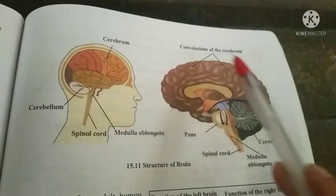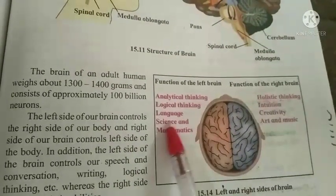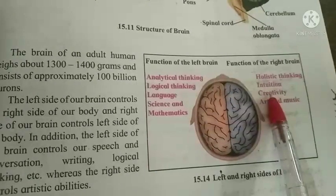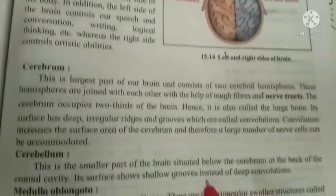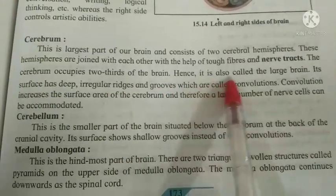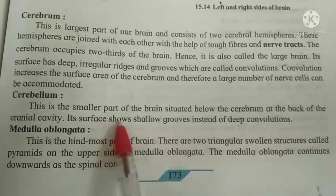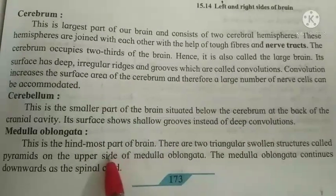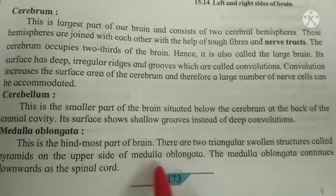The main parts of the brain are the cerebrum, cerebellum, and medulla oblongata. The left brain controls analytical thinking, logical thinking, language, science, and mathematics. The right brain controls holistic thinking, intuition, creativity, art, and music. The cerebrum is the largest part; its two hemispheres are joined with the help of nerve tracts and it occupies two-thirds of the brain. The cerebellum is the smaller part, situated below the cerebrum. The medulla oblongata is the hindmost part of the brain and has two triangular structures called pyramids on its upper side.